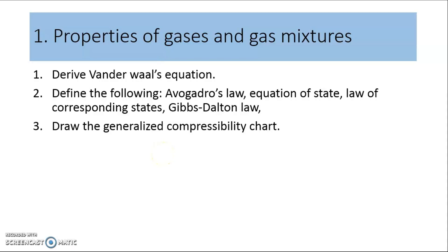In chapter 1, that is properties of gases and gas mixtures, there are three important questions. First is derive the van der Waals equations. In this you need to discuss the van der Waals equations, the different assumptions made for those equations, and finally calculate the values of constants a and b that appear in the van der Waals equations.